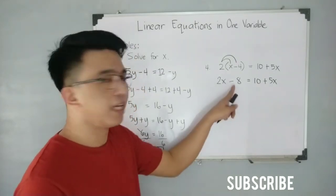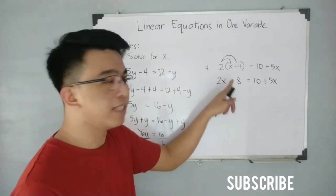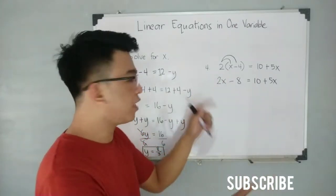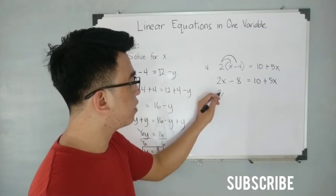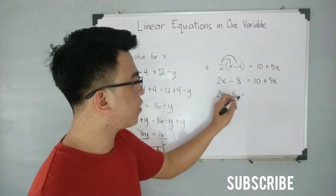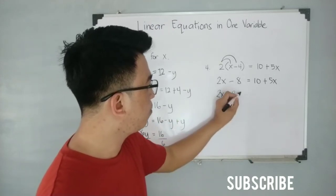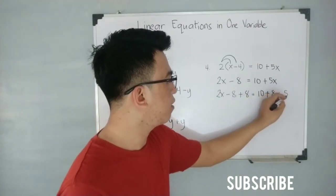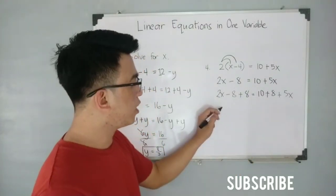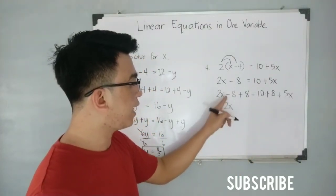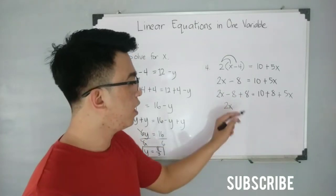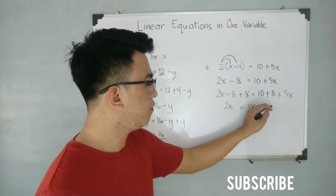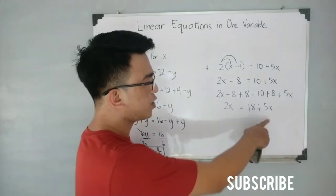Our target is to solve for x. First we need to eliminate the negative 8. Since it is negative 8, we add 8 to both sides: 2x minus 8 plus 8 is equal to 10 plus 8 plus 5x. Simplifying: negative 8 plus 8 equals 0, so the left side becomes 2x. On the right side, 10 plus 8 equals 18, giving 2x is equal to 18 plus 5x.